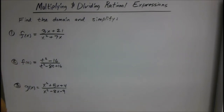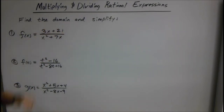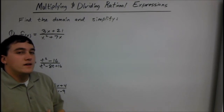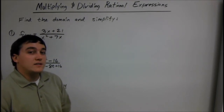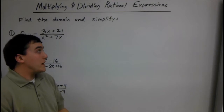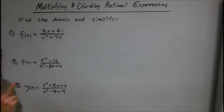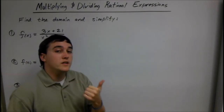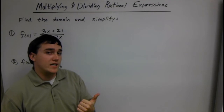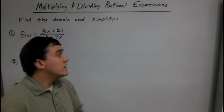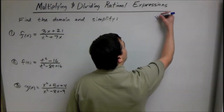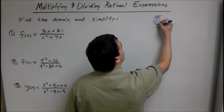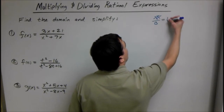We'll start off with a few examples, including finding the domain. The only thing you have to look at when finding the domain is domain restrictions. There are two types: you can't have a negative under a square root, and you can't divide by zero, because a number divided by zero is undefined.